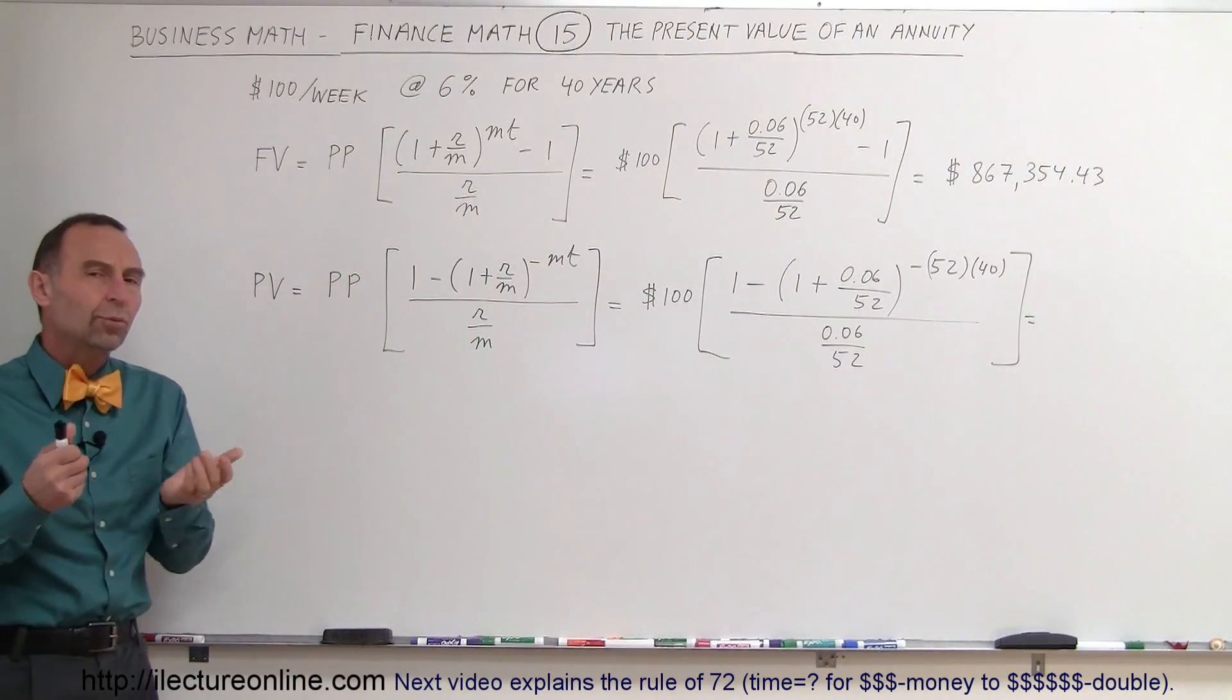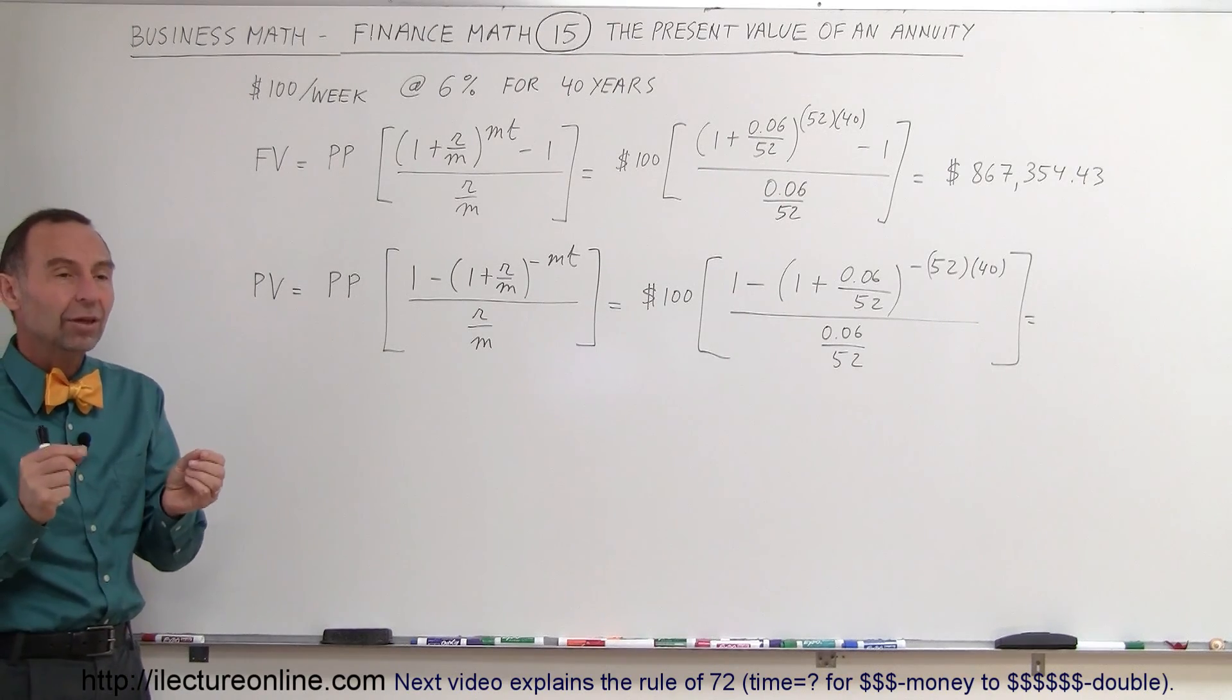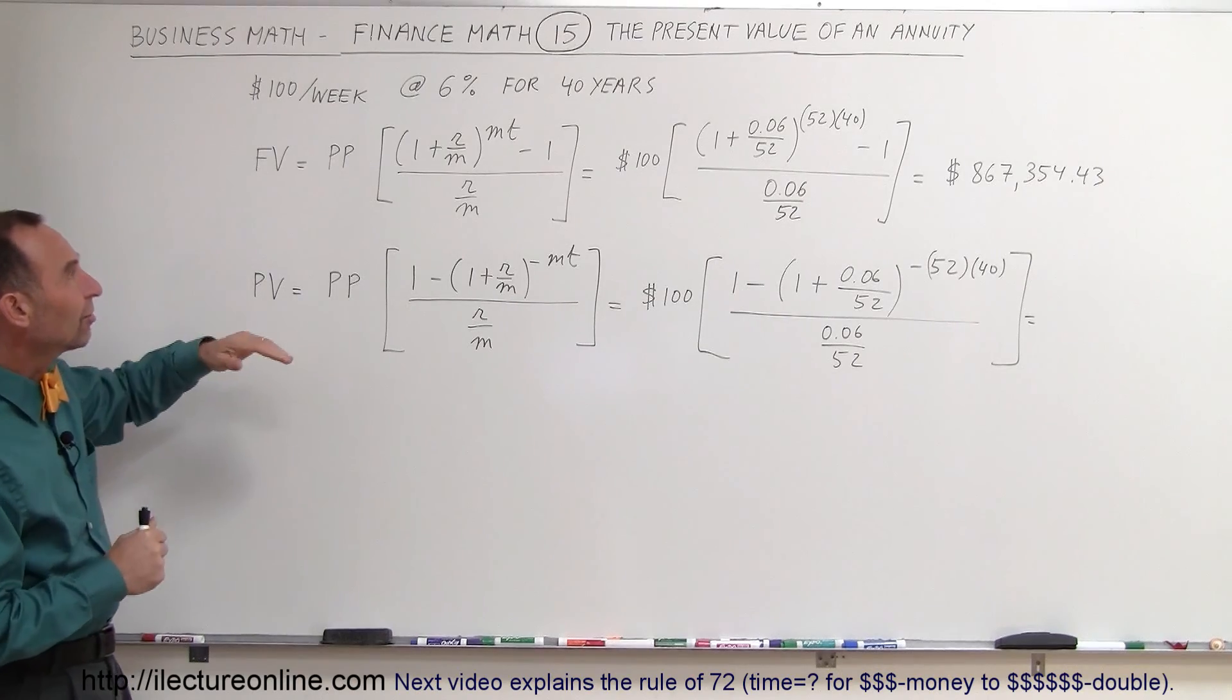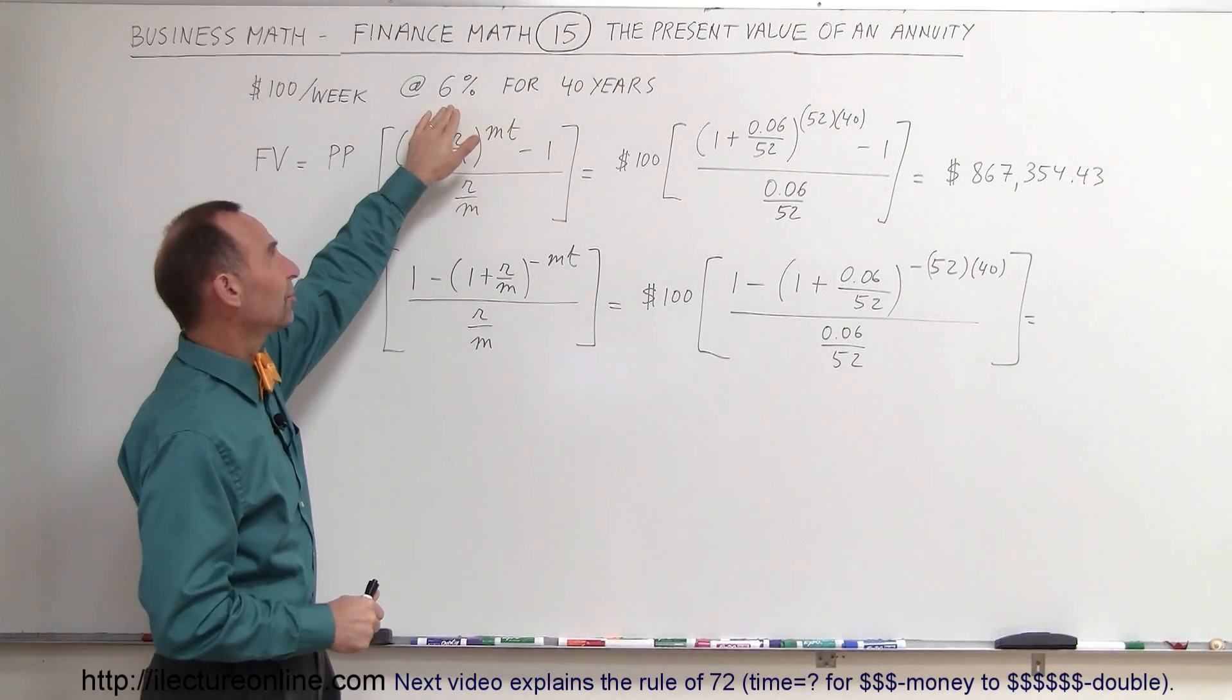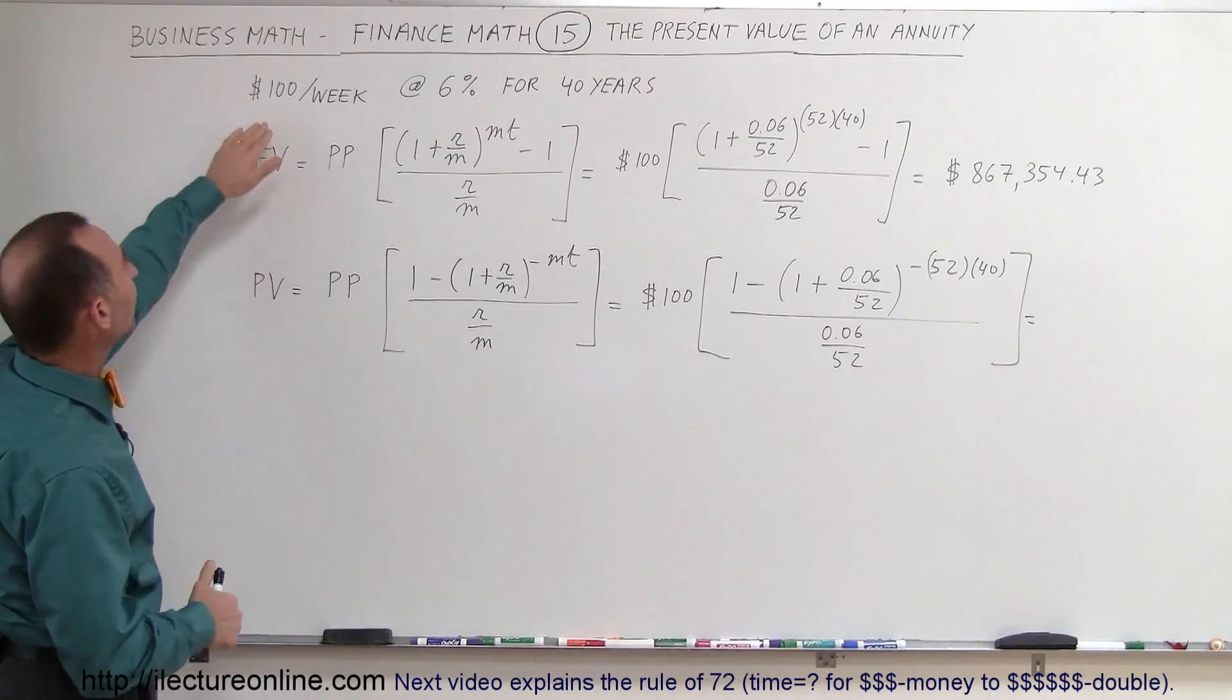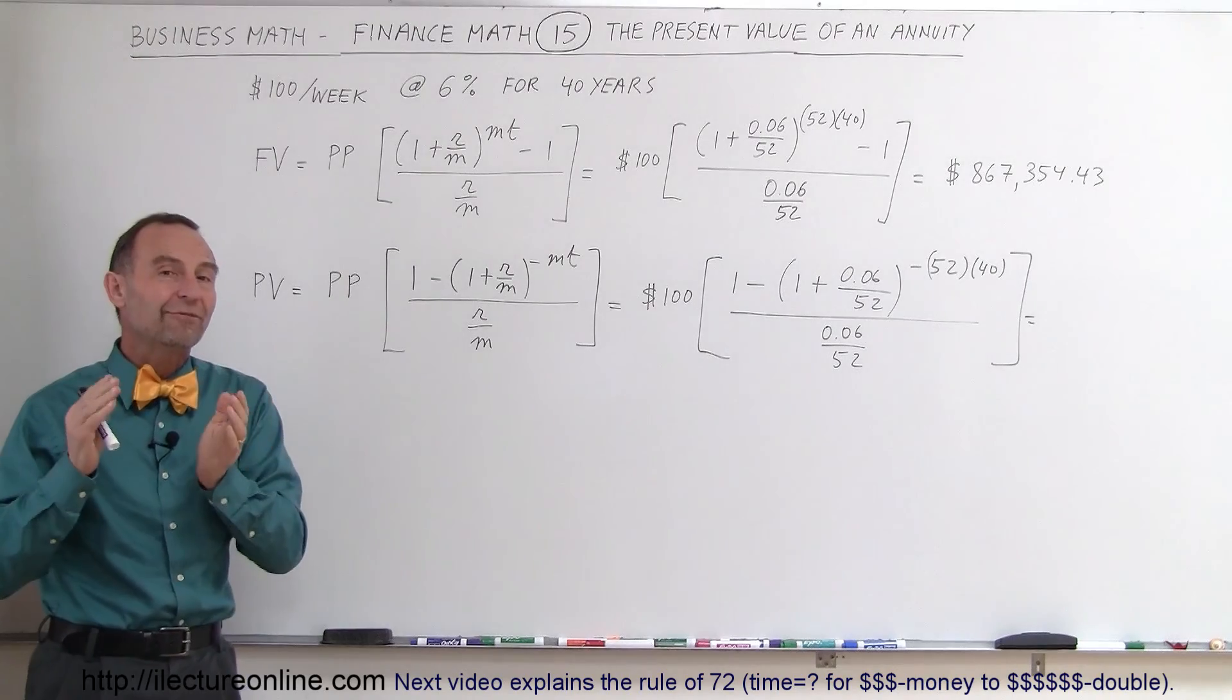So the question is, what do we mean by the present value of that account? Well, that means what amount would you need today so that you could invest it for a period of 40 years at 6% interest with weekly compounding to end up with the very same amount.